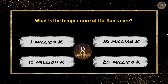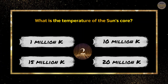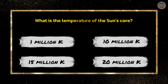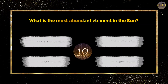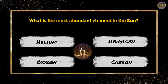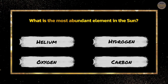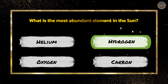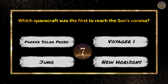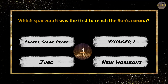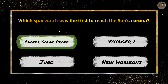What is the temperature of the Sun's core? What is the most abundant element in the Sun? Hydrogen. Which spacecraft was the first to reach the Sun's corona? Parker Solar Probe.